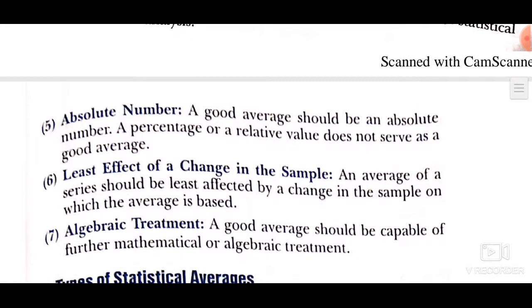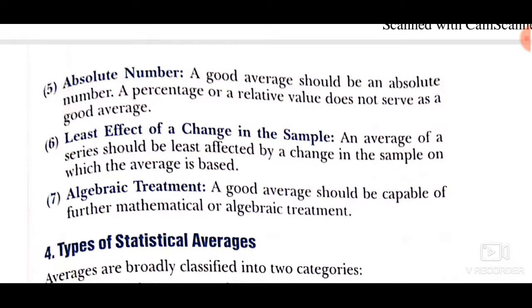Fifth: absolute value. A good average should be an absolute number; a percentage or a relative value does not serve as a good average. Absolute number means a single number like 1, 2, 3 — no decimals or percentages. Sixth: least effect of a change in the sample. An average of a series should be least affected by a change in the sample on which the average is based. For example, if marks in an English exam are slightly increased and you have changed the data, the effect on the previous average should not be large.